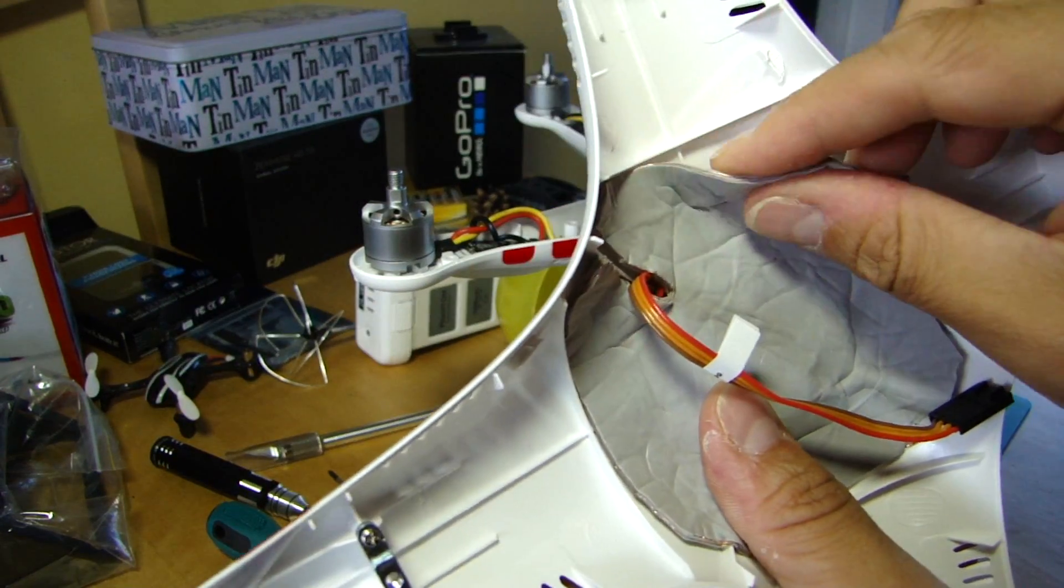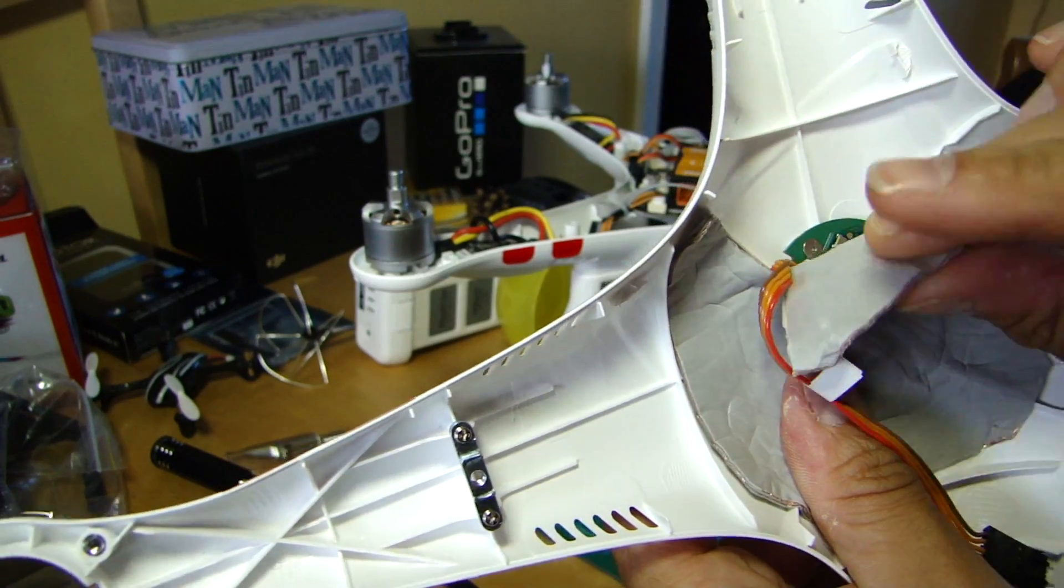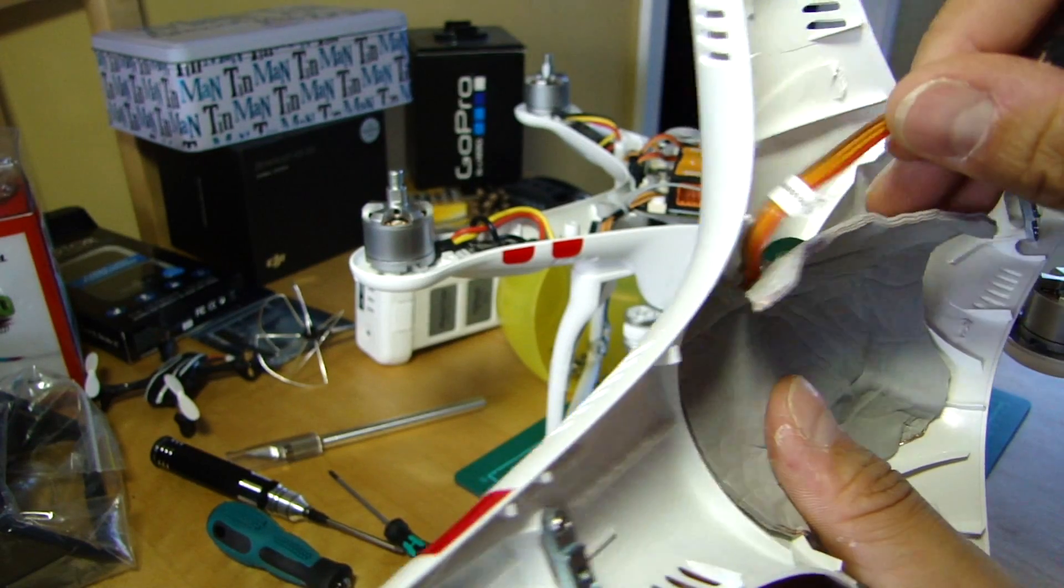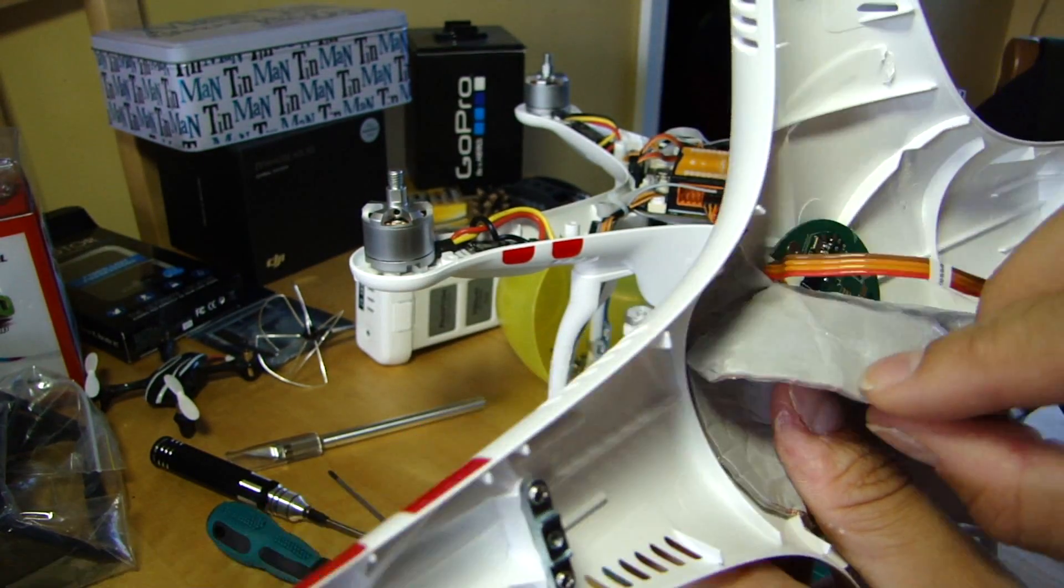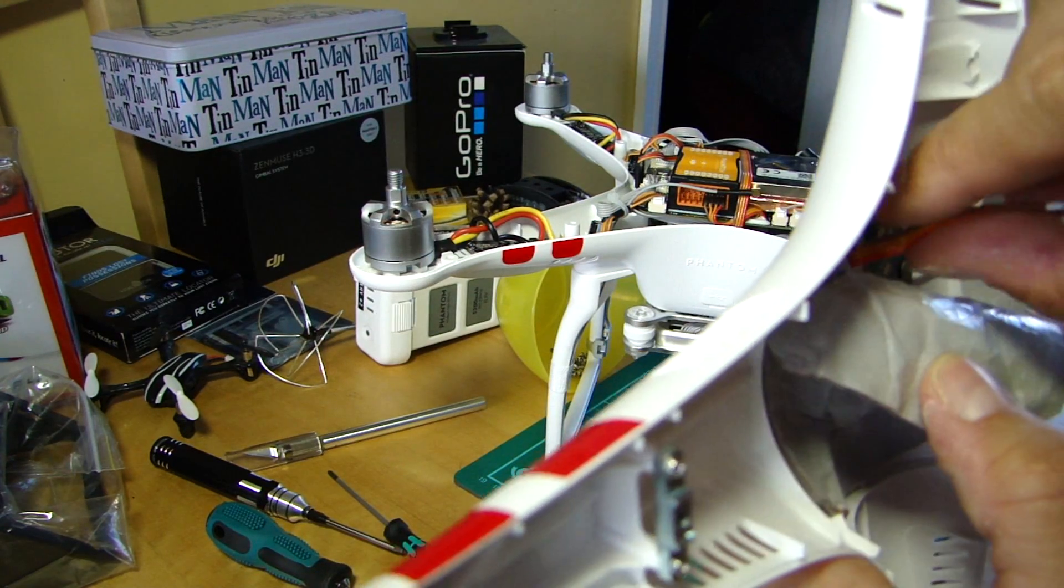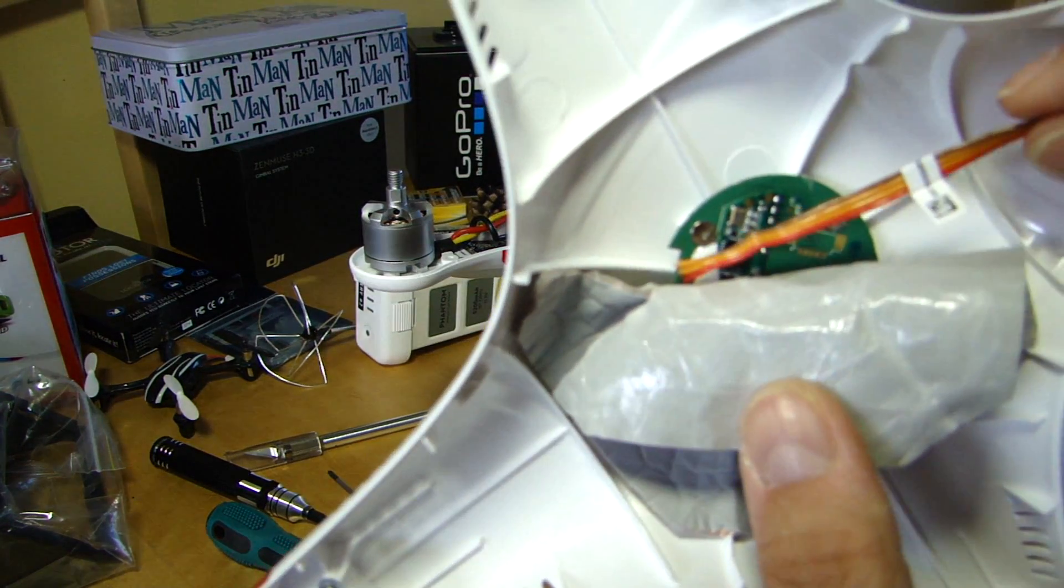And then you just peel it away very carefully. I don't have to be too rough with it. And you can see peeking out, that's the GPS module. We don't want to touch that. We just want to take the cable.